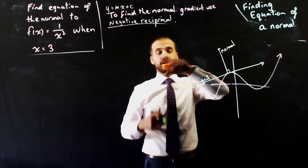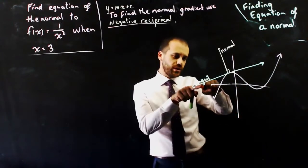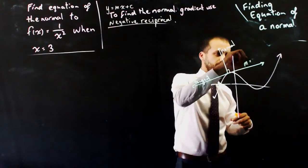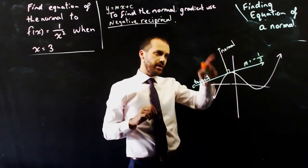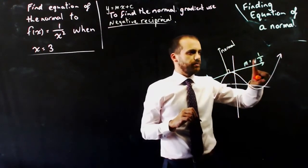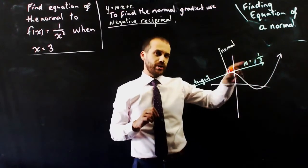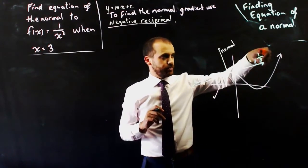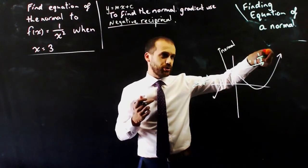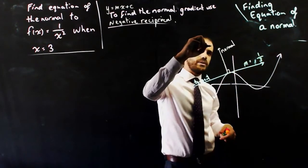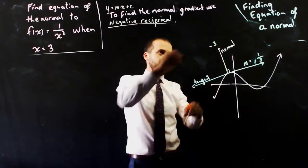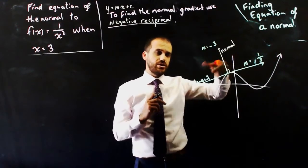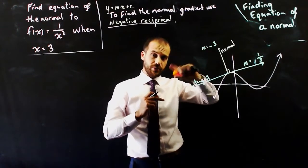So to find the normal gradient, use the negative reciprocal. If the gradient of this line is m equals negative one third - sorry, it can't be negative because it's going uphill. If the gradient is equal to positive one third, then the normal gradient is going to be that gradient flipped upside down, that's what reciprocal means, but negative. So the normal is going to be negative three over one, or just negative three. The negative reciprocal will tell you the normal and the tangent.